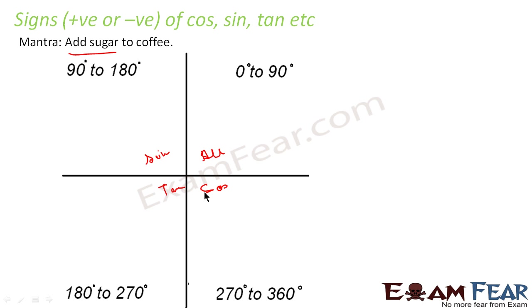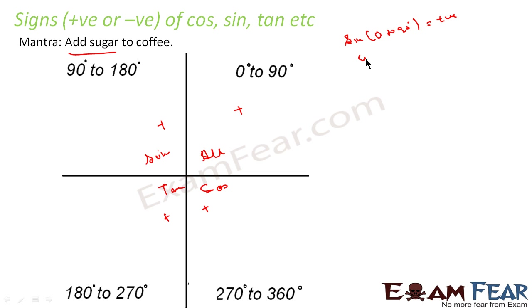If theta is between 0° and 90°, any kind of trigonometric function is positive — all are positive. So sine of any value from 0° to 90° gives you a positive result. Similarly, cos of theta from 0° to 90° is also positive, and tan of theta from 0° to 90° is also positive. This is the first quadrant.